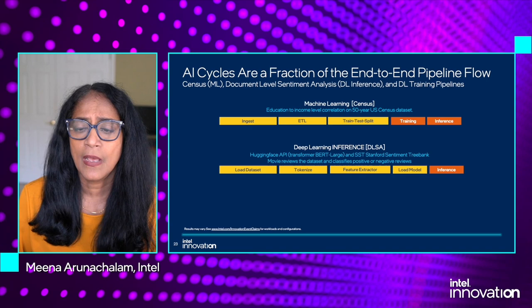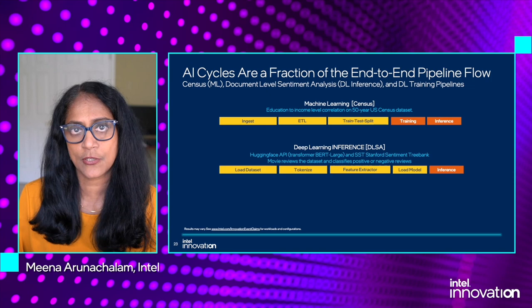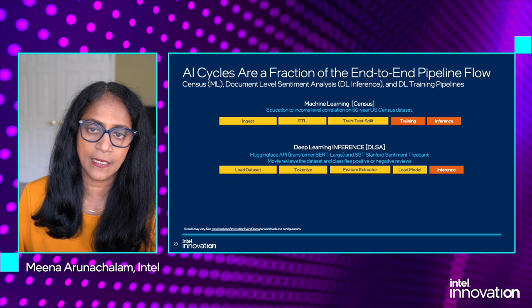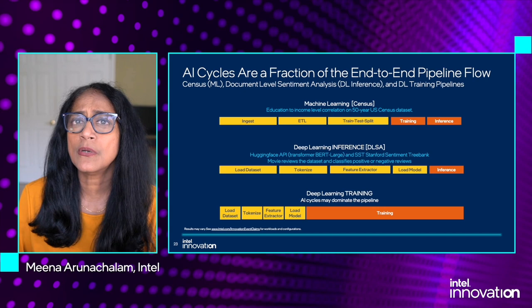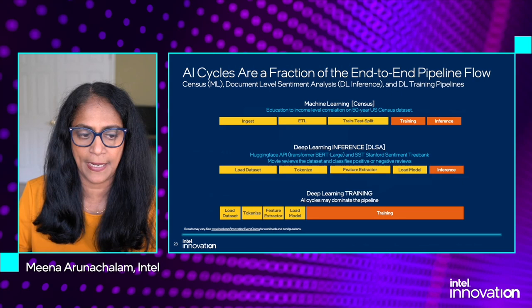Data loading and preprocessing can take up a huge chunk of the overall end-to-end pipeline. Let's take a deeper look at the census ML workload that trains a ridge regression-based model using 50 years of US census data and predicts education level of people based on their income, age, and gender. Data ingestion into a data frame is followed by ETL ops like drop, fill-in, and others. The dataset is split 10-to-1 to create a training set and a test set, with the train-test split repeated multiple times to randomize and remove bias. The DL pipeline is a document-level sentiment analysis workload based on the BERT large NLP topology, where the SST review document dataset is loaded, sentences are tokenized, feature extraction is done, a pre-trained fine-tuning model is loaded, and multi-stream inference is conducted.